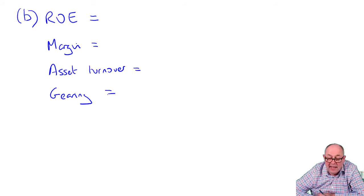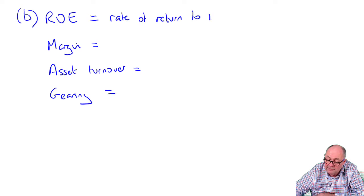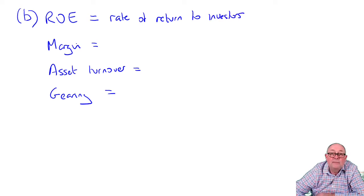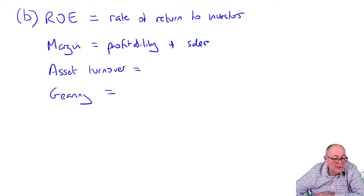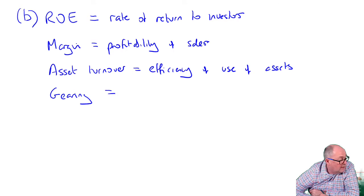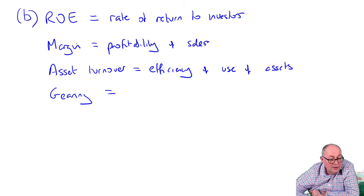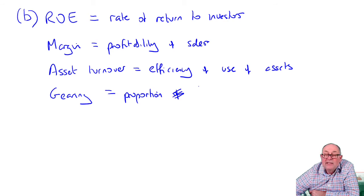To explain these would be okay. Return on equity is the rate of return to investors. Margin is about the profitability of sales. Asset turnover is about the efficiency of use of assets. And this final ratio, assets over equity, tells you about the proportion of the business that is debt as opposed to equity. In this case, the way it works out, it's strictly showing us about the proportion financed by equity.